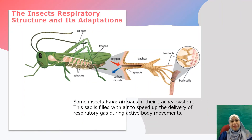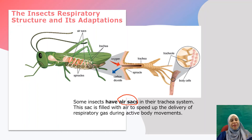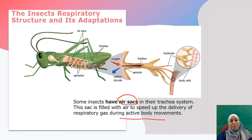Some insects have air sacs at their tracheal system. You can see from the picture here — these are the air sacs. The function of air sacs is to speed up the delivery of respiratory gases, especially during active body movements.